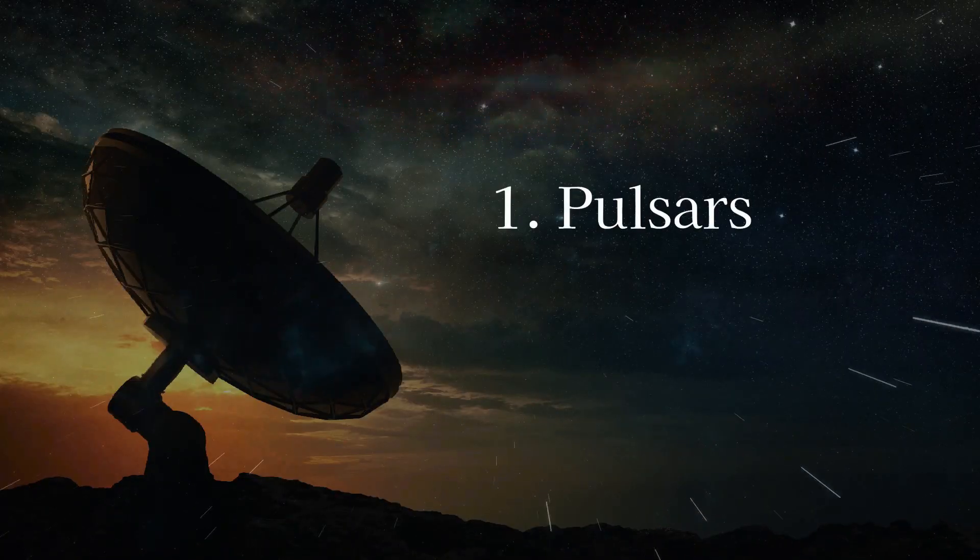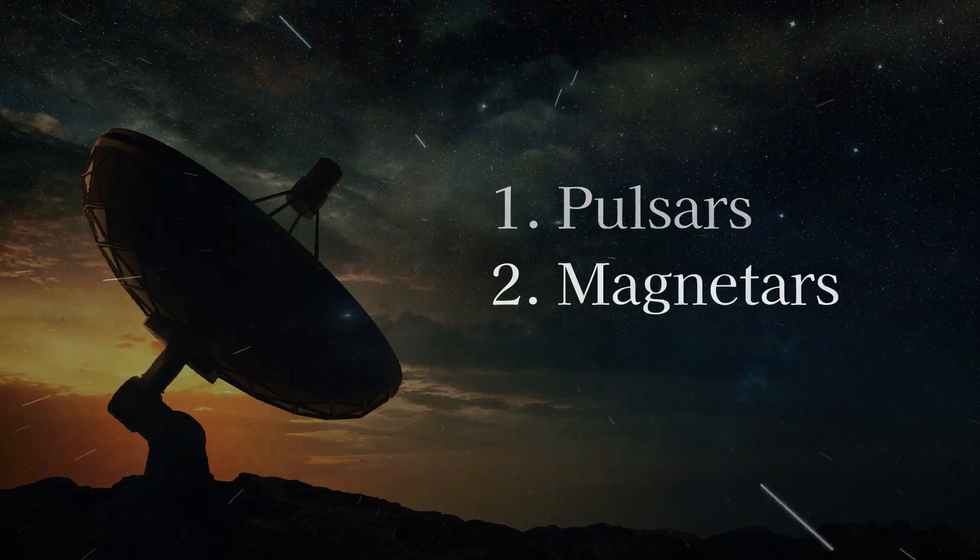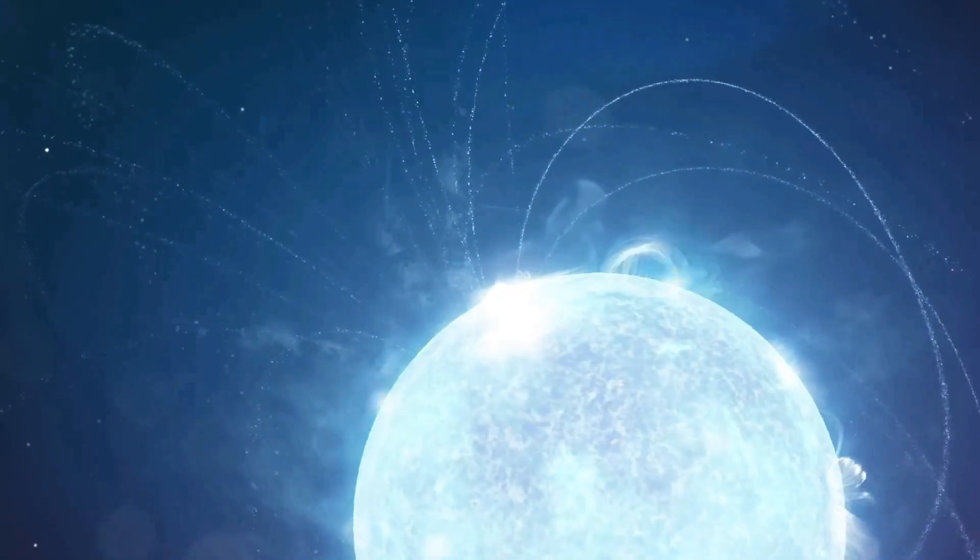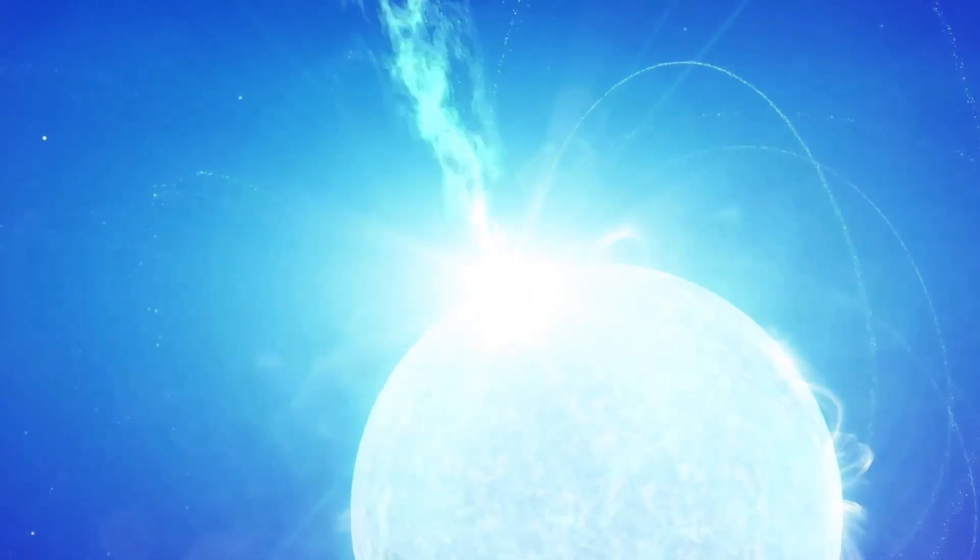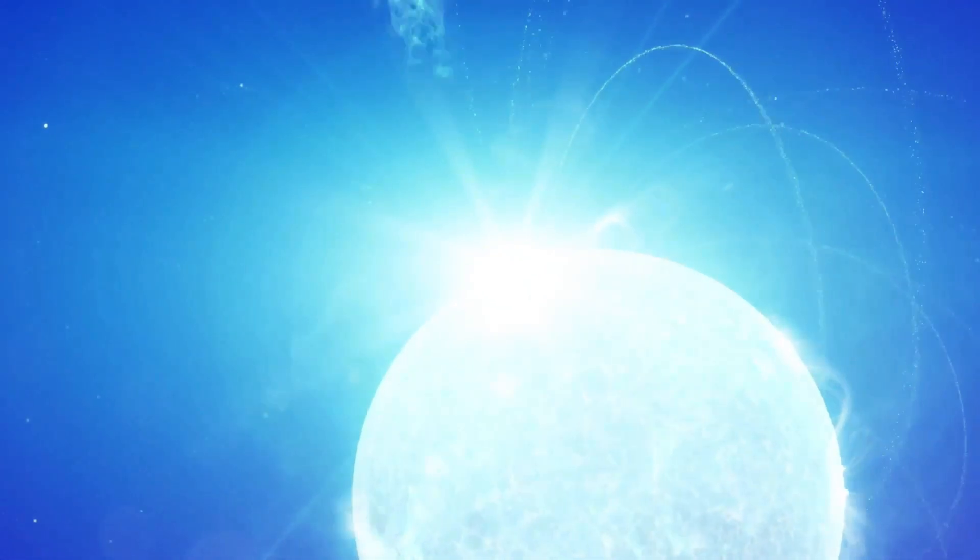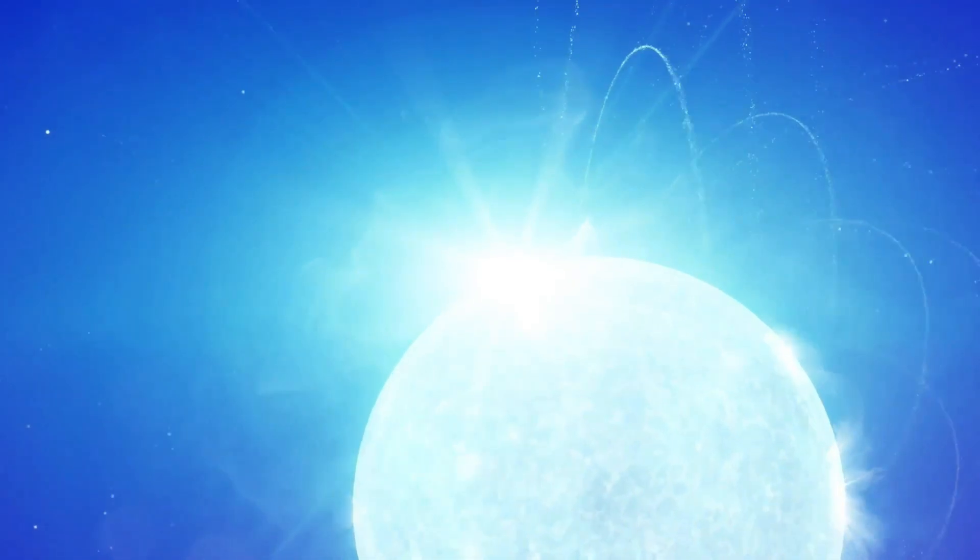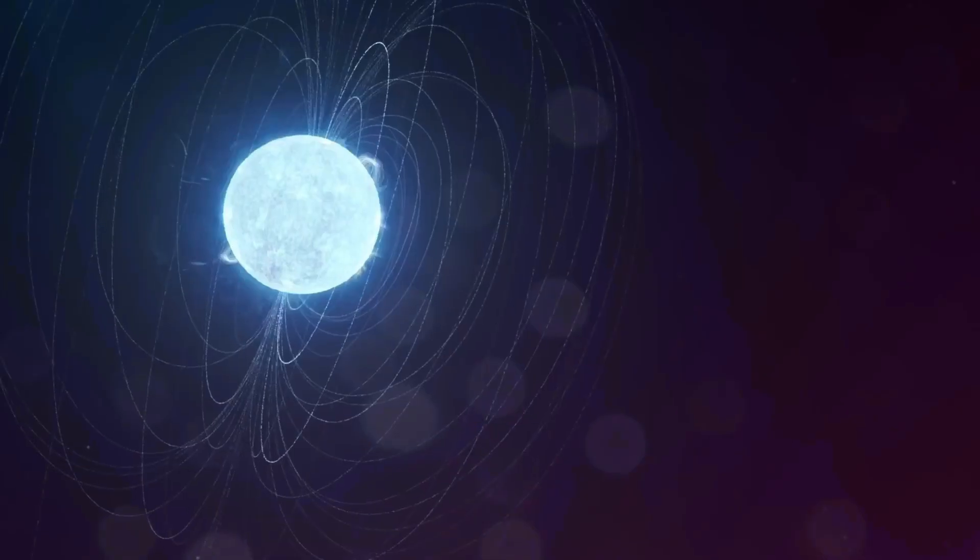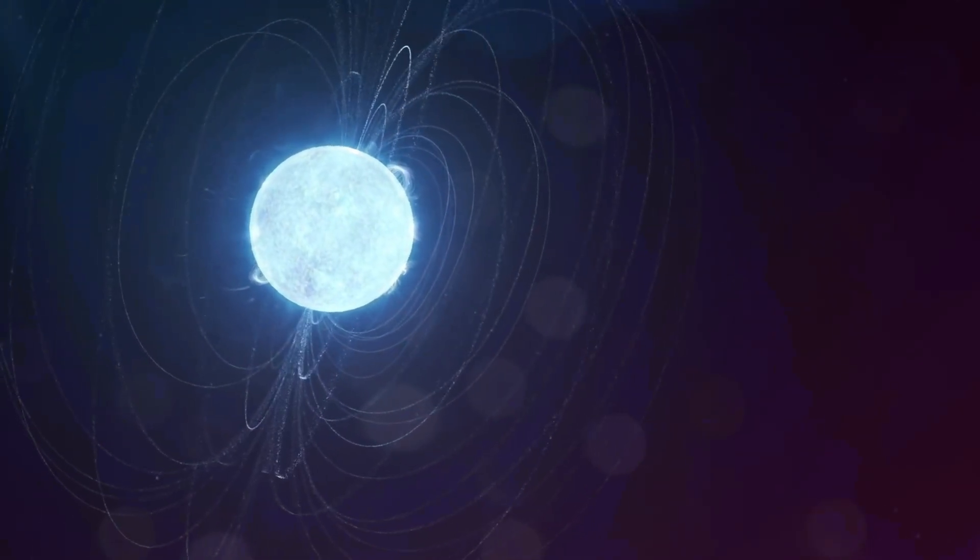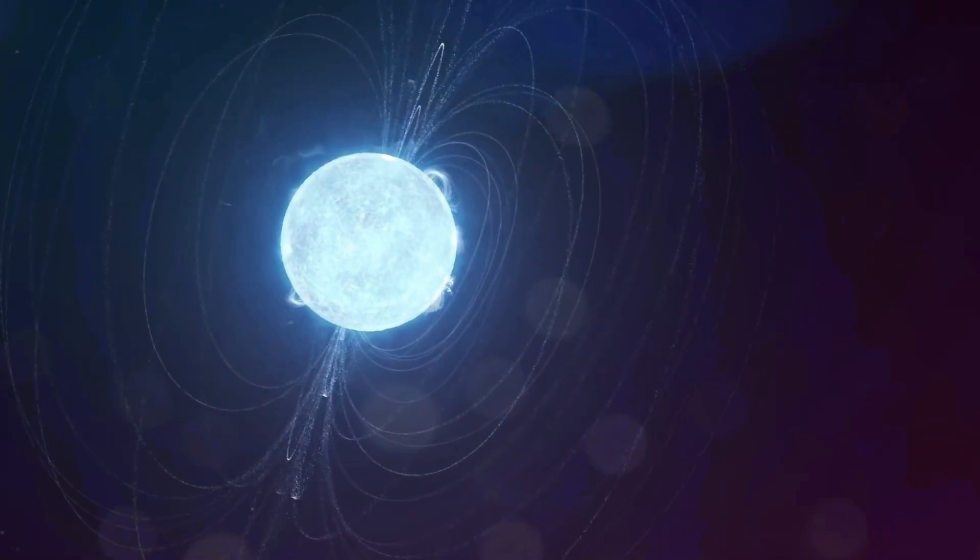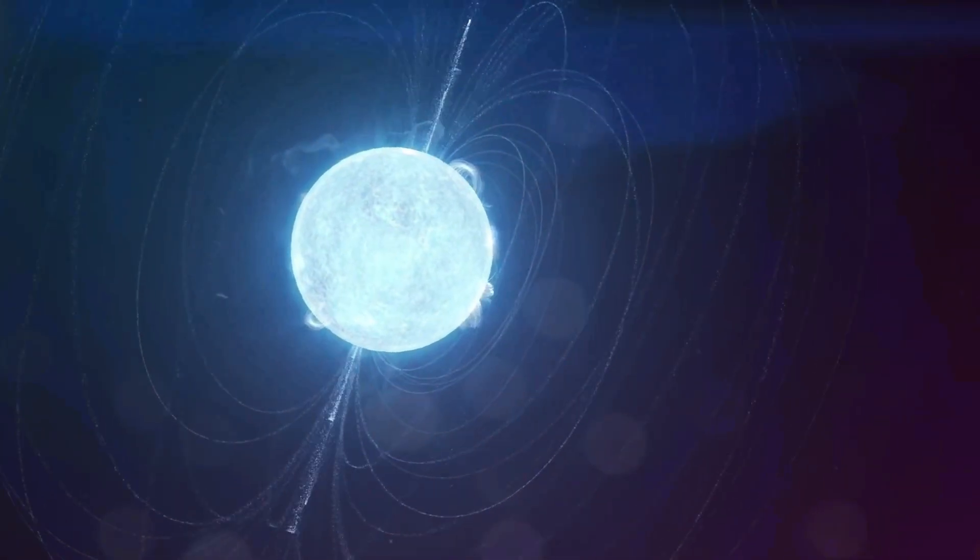This brings us to theory number two, magnetars. Another explanation researchers offer is that the object could be an ultra-long period magnetar, a rare type of neutron star with extremely strong magnetic fields that can produce powerful bursts of energy. However, this theory comes with its cons. Until recently, all known magnetars released energy at intervals ranging from a few seconds to a few minutes, far more often than the 22-minute intervals that this object emits radio waves.